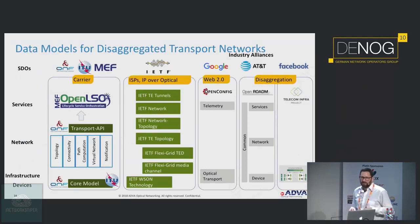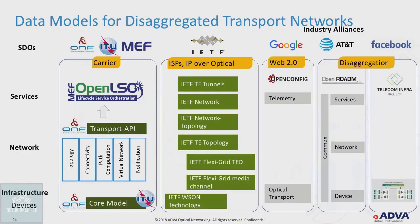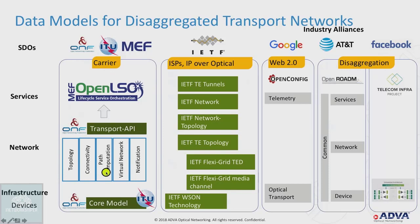For these visions, standardization bodies and industry alliances developed data models. The IETF was early and straightforward for IP over optical network operators. The ONF Transport API matured over time and is now very prominent, with I2T, MEF, and OIF also propagating it. In the Transport API you have different network services: topology dissemination, connectivity service, path computation, virtual network specification, and notification subscriptions for alarms.